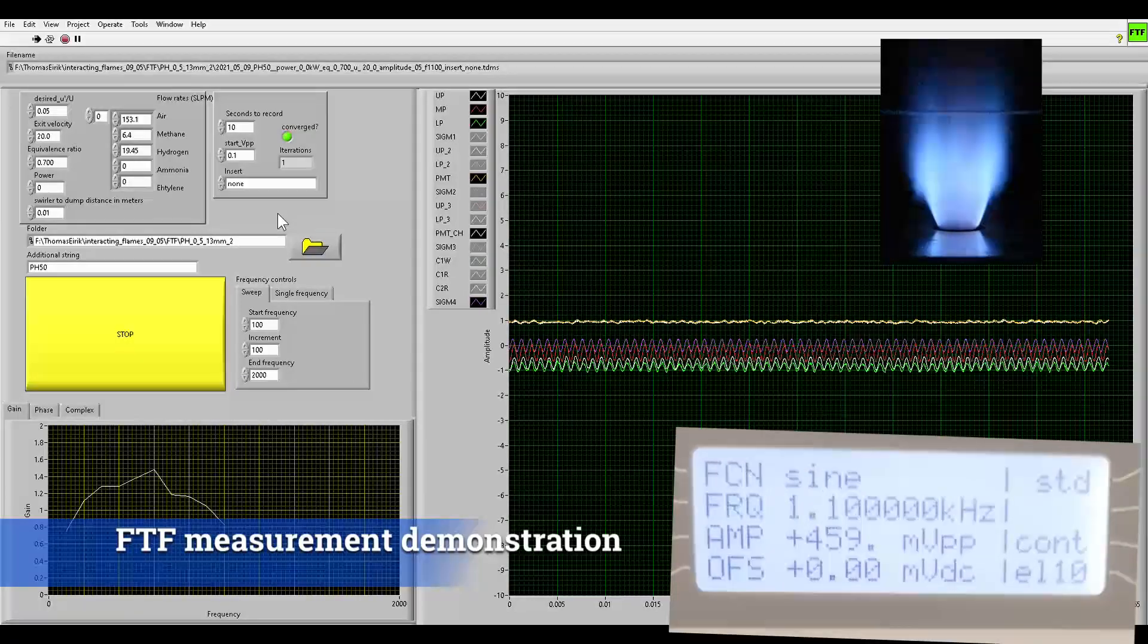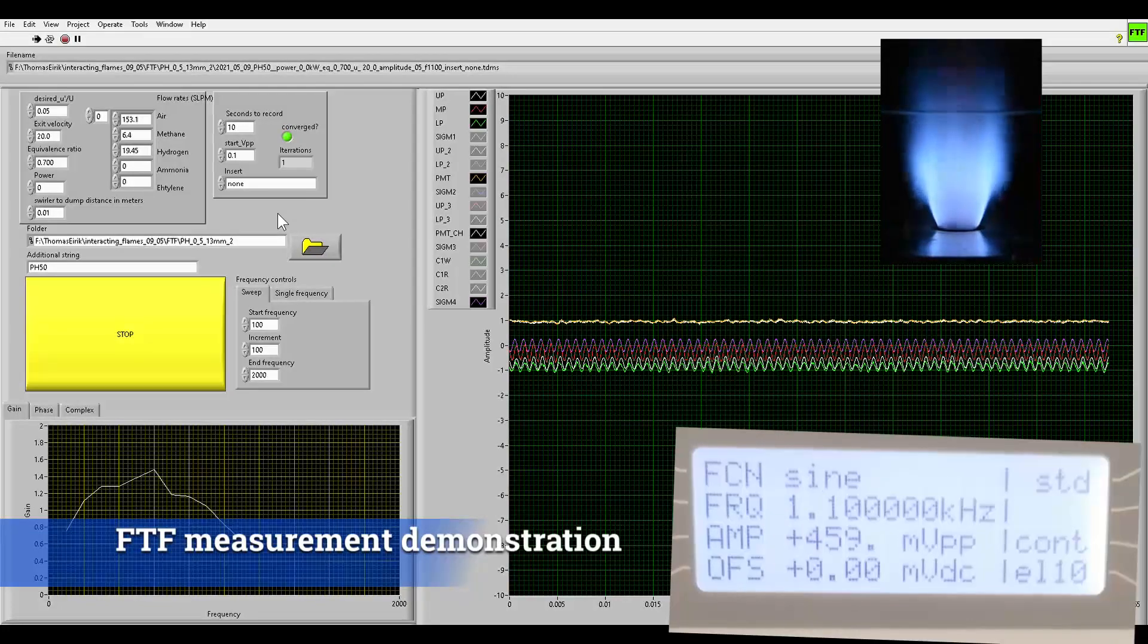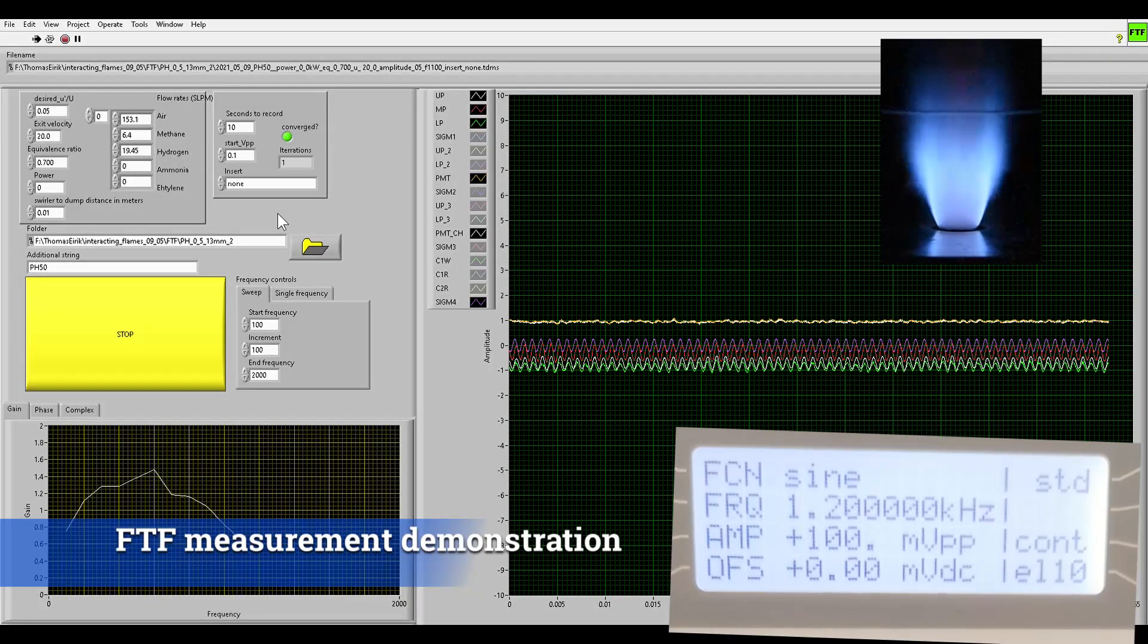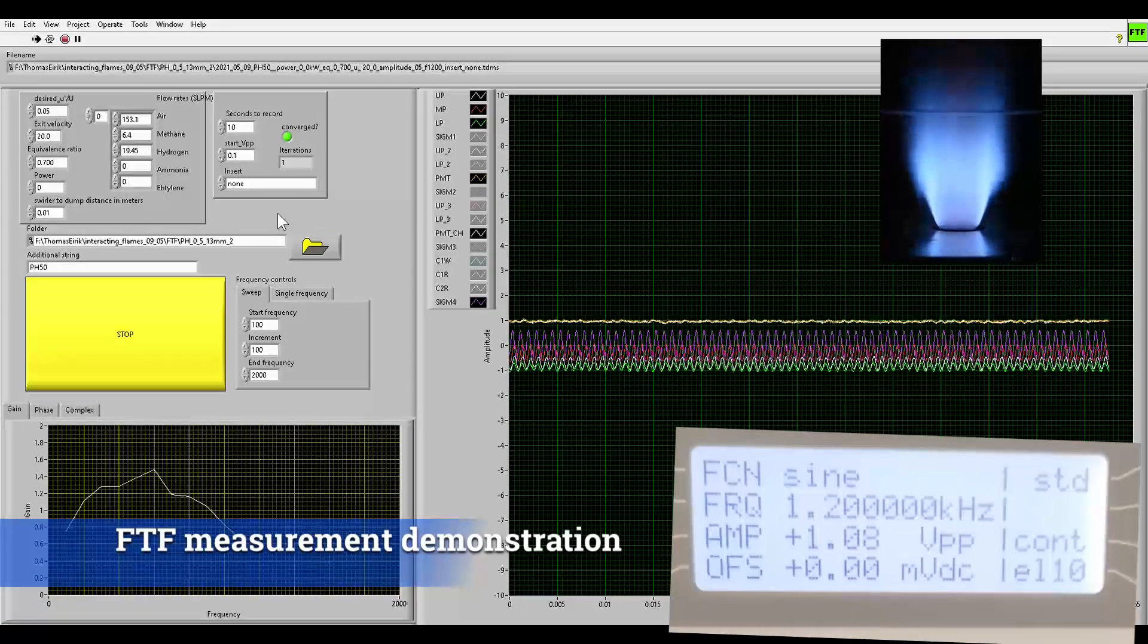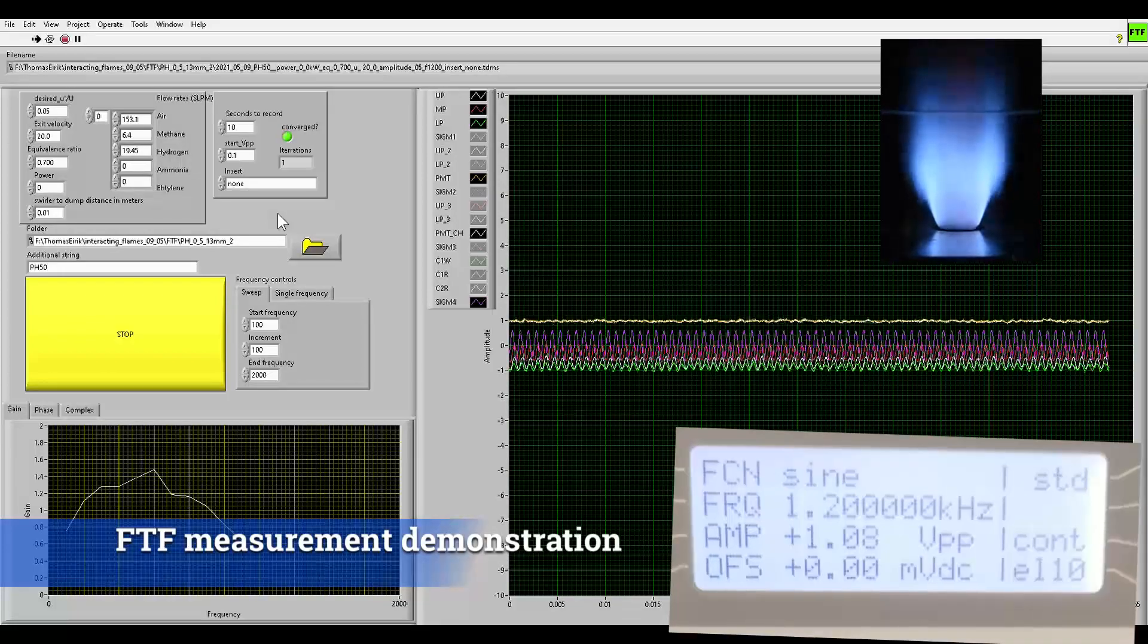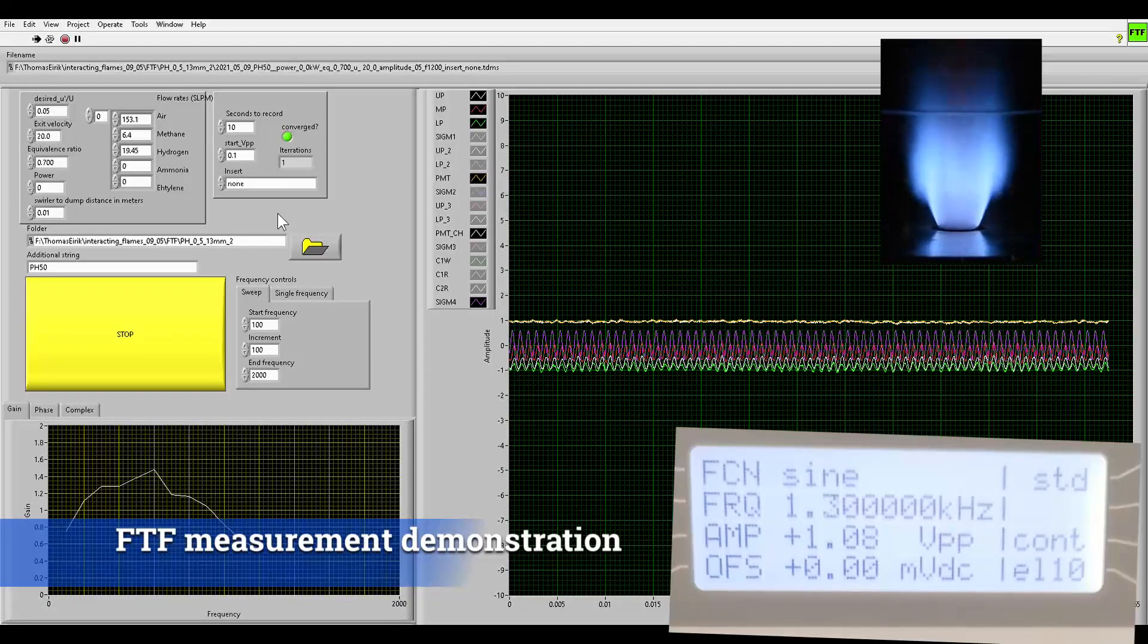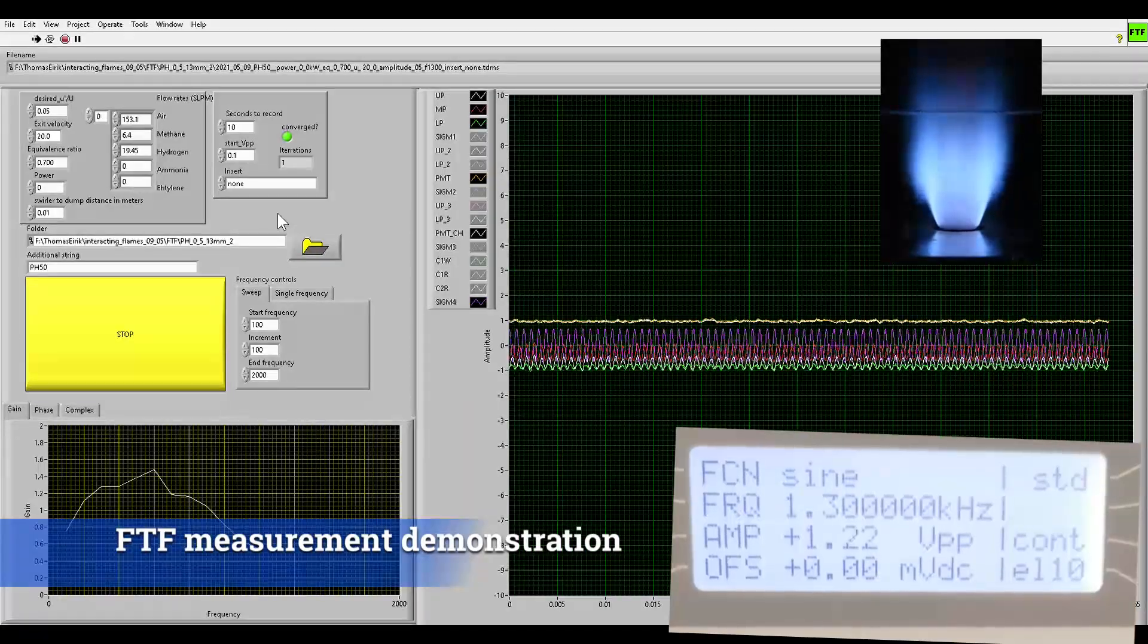Before we finish, take another look at the signal generator screen, shown at the bottom right, as the forcing frequency has changed. You'll notice that the signal amplitude, labelled amp, iterates until the target velocity fluctuation amplitude is reached. 10 seconds of data is then recorded. We use extrapolation and interpolation in our iterations, and we set a maximum deviation from the target that determines whether we have sufficiently converged. It's recommended to also set a voltage limit, to avoid blowing the speaker drivers.